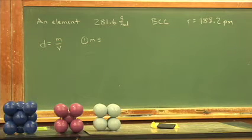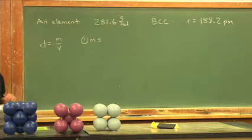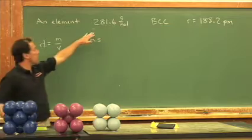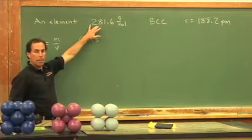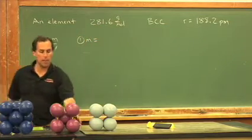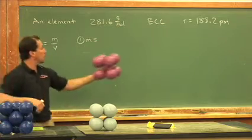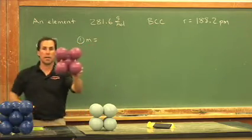We get that from the molar mass. The molar mass has been determined to be 281.6 grams per mole. We're going to divide this by Avogadro's number to get the grams per atom, multiply it by two because there are two atoms inside one of these BCC unit cells.